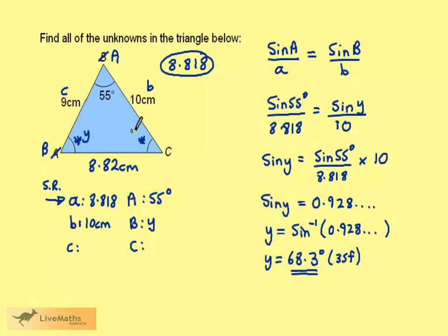We need to find this angle here, which I'll call Z. Z equals 180 degrees, take away 55 degrees, take away the 68.3 we just found, giving us 56.7 degrees.